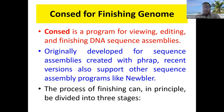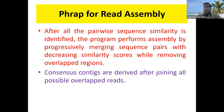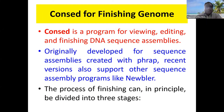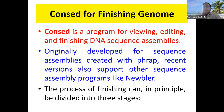The next tool is Consed. Whatever data is there from PHRAP is taken as input by Consed, which is used for finishing the genome — that is, complete genome assembly. Consed is used in three ways: first, to view the data; second, to edit the data; and third, to finish the assembly.